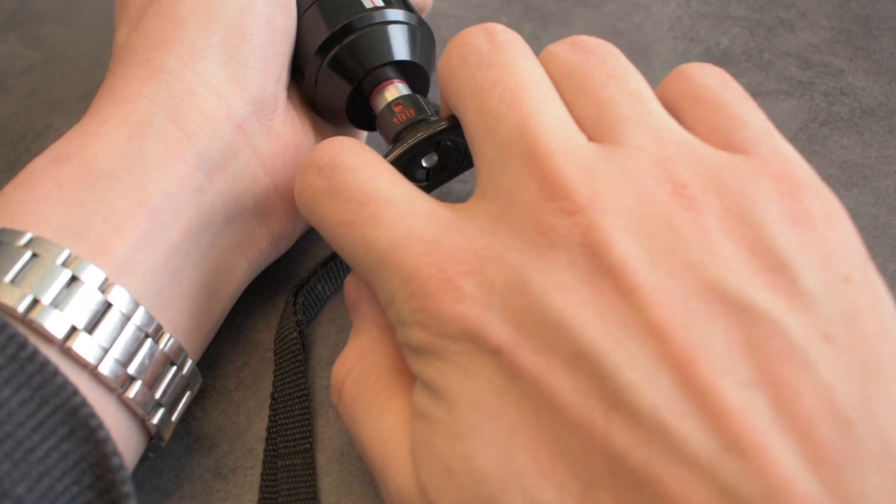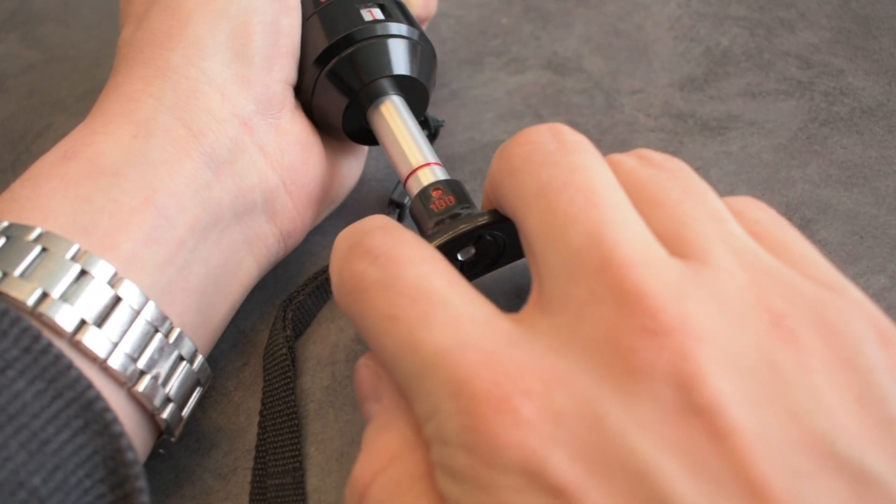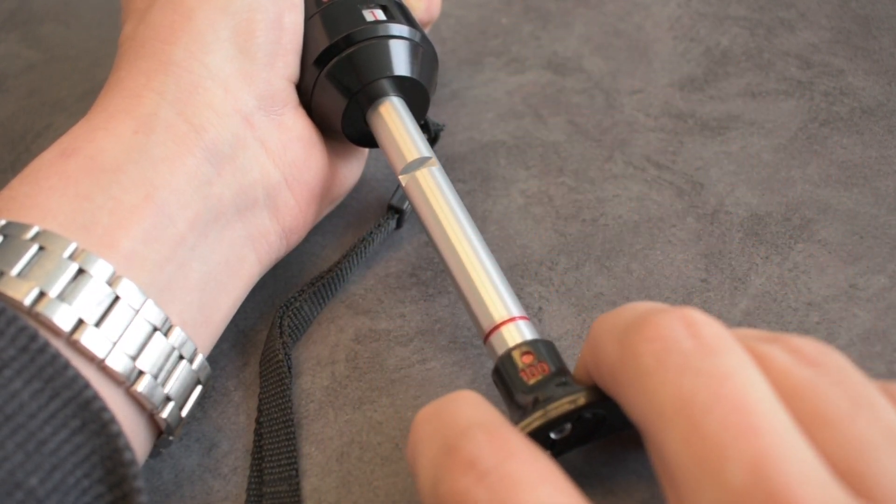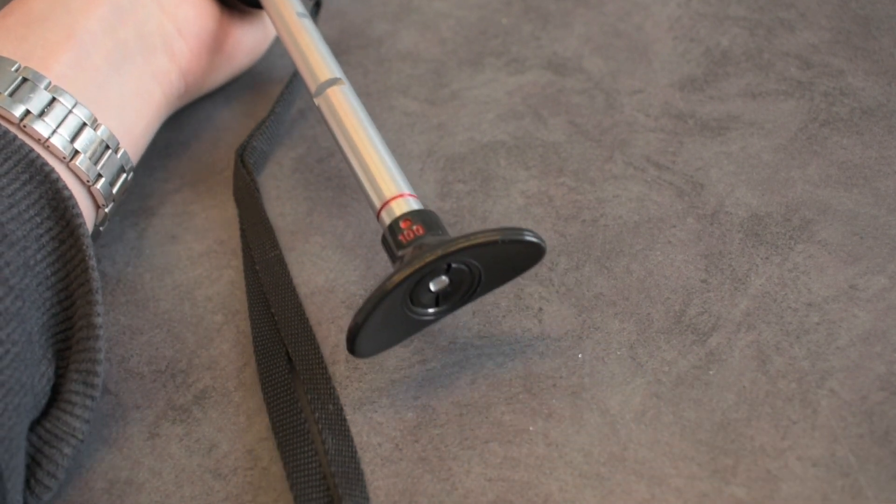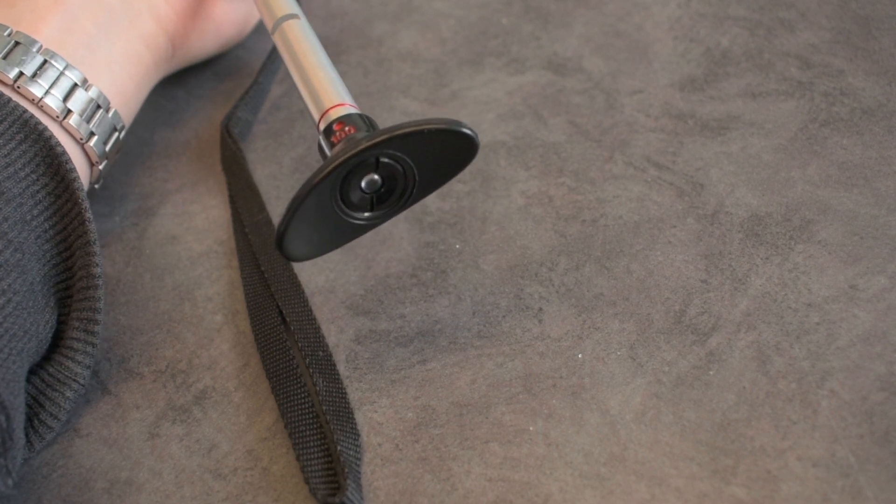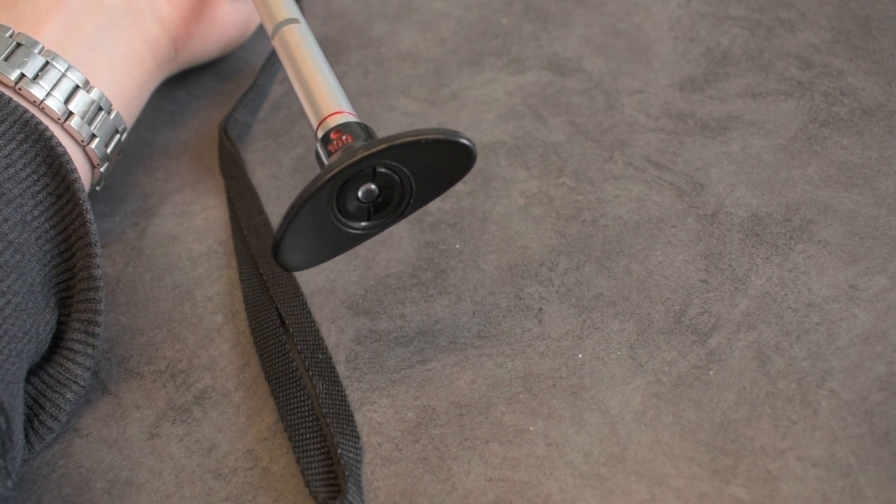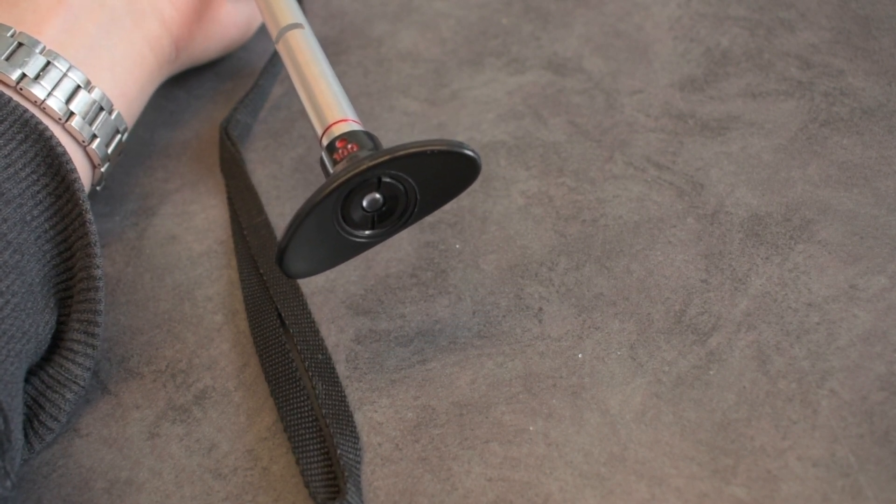Once we have it set to 100, grip the pump handle and give it a strong pull until the handle is fully extended. The handle should lock fully extended. If the handle is getting pulled back into the pump unit, you either didn't pull it far enough or you don't have those dots on the handle and the body lined up.